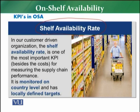Improving the shelf availability rate is one of the key KPIs for the retail store, the operations team, the supply chain team, and the buying team. It is the key objective — because if products are available on the shelf, that will bring more business for the retailer.